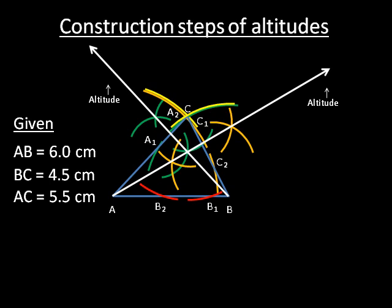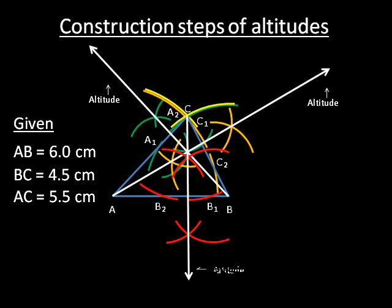Now put the pointer of compass at point B1 and take a radius more than half of the distance between B1 and B2. Then draw arcs below and above the line AB. Without changing the radius of the compass, put the pointer at point B2 and draw arcs below and above the line AB intersecting the previous arcs. Then with the help of a ruler, draw a straight line from point C passing through the intersecting points of these arcs. This is an altitude drawn from point C towards the line AB.